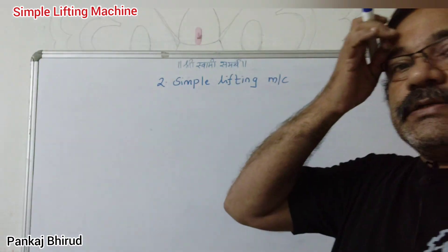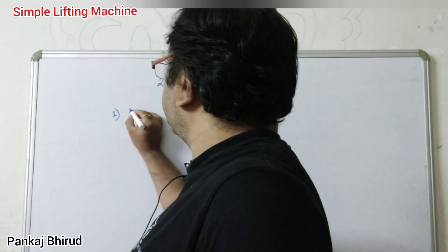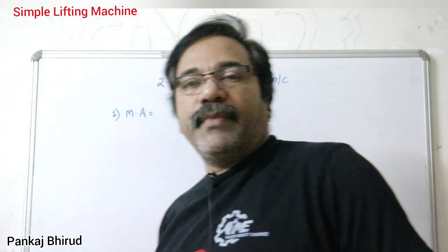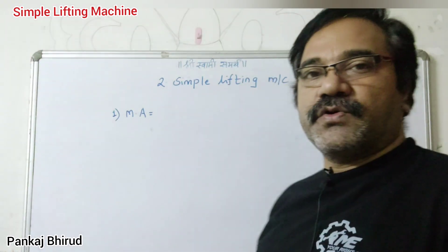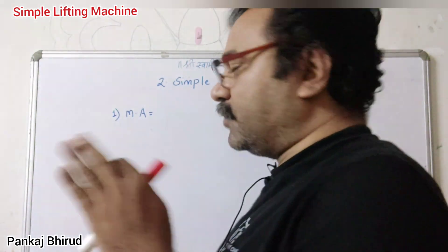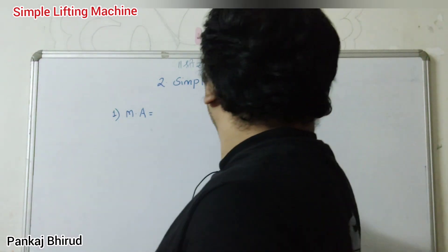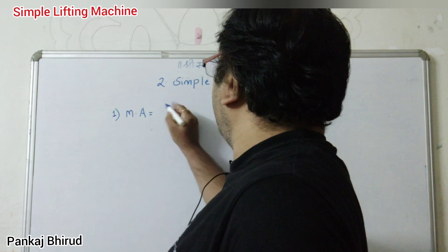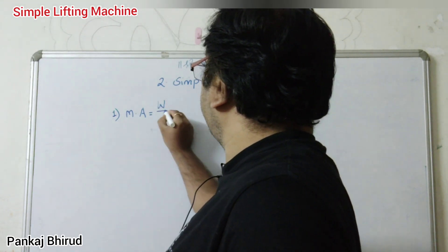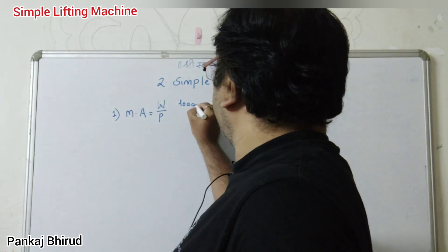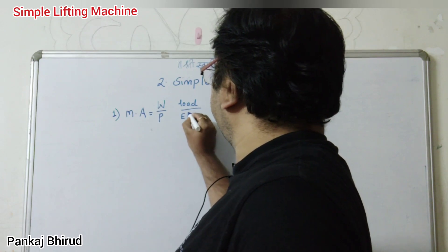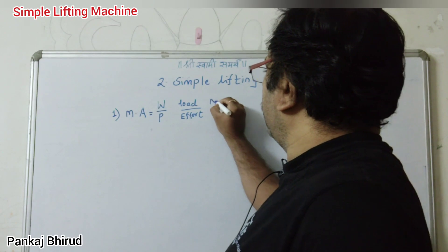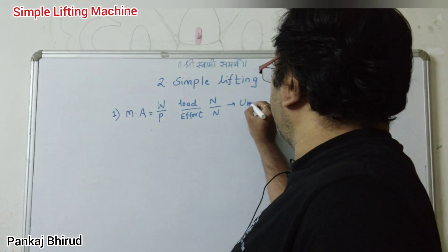So let us start from the first term, that is mechanical advantage. Mechanical advantage is a ratio of load to the effort — the load to be lifted to the effort required to lift the load. So it is W upon P, where W is load and P is effort, both having the unit of Newton, so it is unitless.